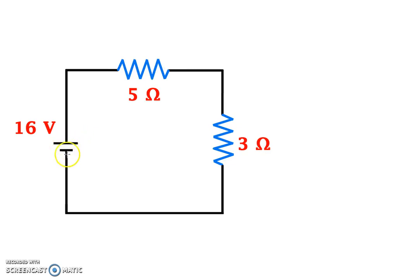First we realized that this is the battery here, 16 volt battery. That means this is the positive, this is the negative, which means my current is running along that way.